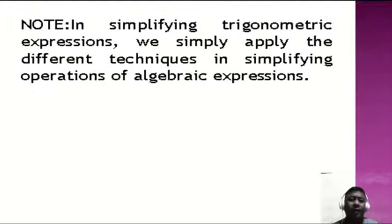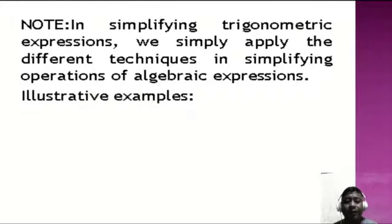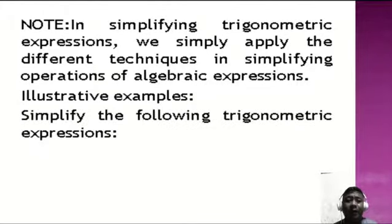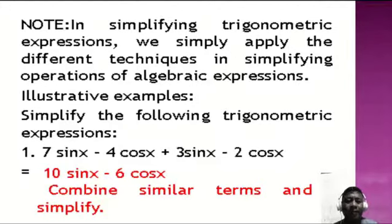In simplifying trigonometric expressions, we apply the same techniques used for algebraic expressions. Illustrative example one: simplify 7 sin x minus 4 cosine x plus 3 sin x minus 2 cosine x. This equals 10 sin x minus 6 cosine x — combine similar terms and simplify.